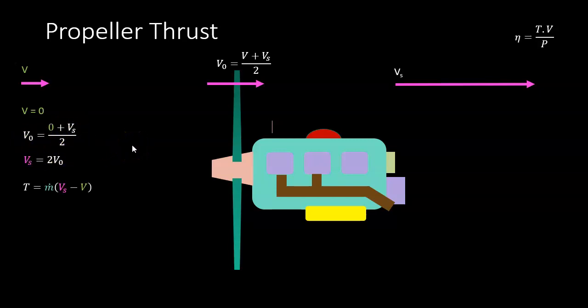Now the thrust produced by a propeller is the mass times acceleration, and the acceleration is the change of velocity with time. That's the slipstream velocity Vs minus the free stream velocity V, and the time factor comes from the mass flow in kilograms per second.